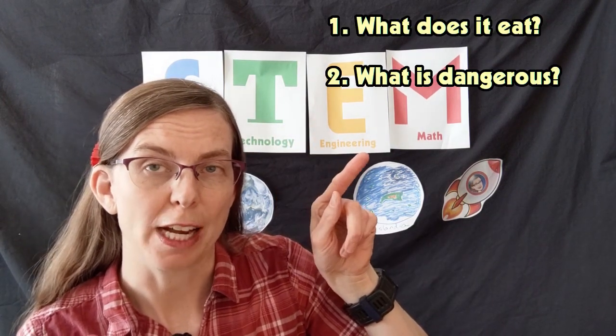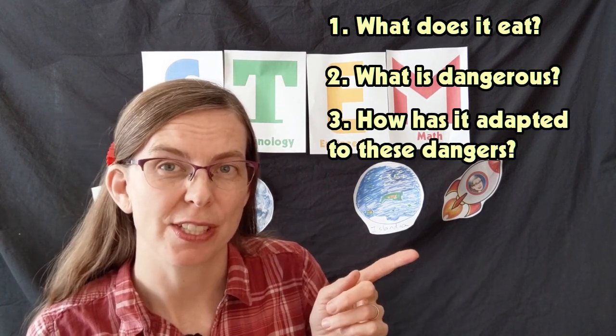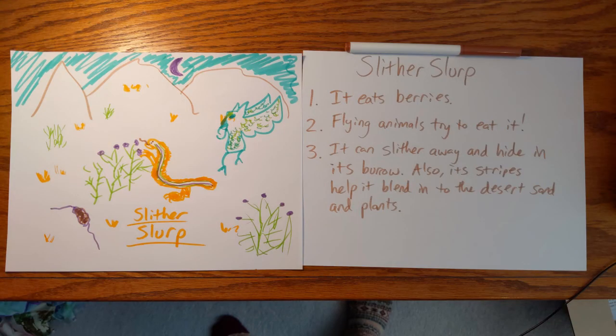I'm also going to give my animal a name — I'm going to call it a slither slurp. There's a lot more you could invent about your animal, but I at least want you to answer these three questions: What does it eat? What's dangerous for your animal? And how is it adapted to these dangers? Draw it on paper, take a picture, and share it with your class. I can't wait to see what interesting animals you will imagine. I hope you stay safe, have fun, and keep imagining.